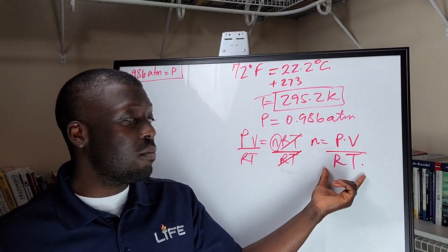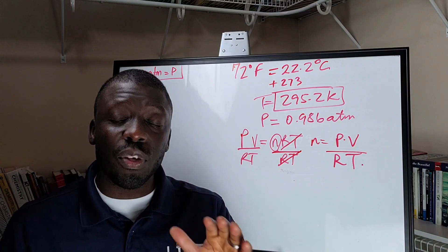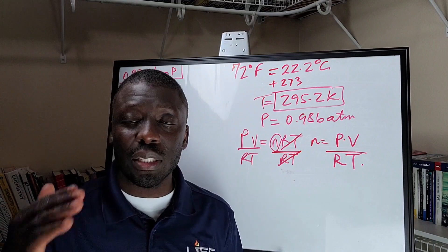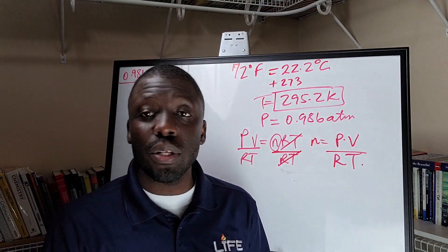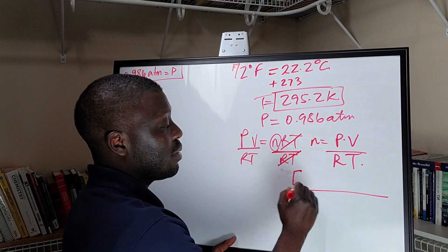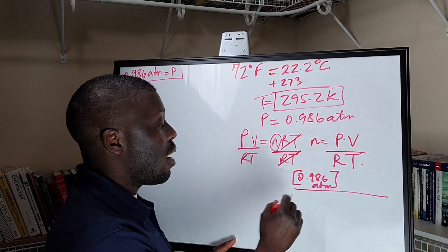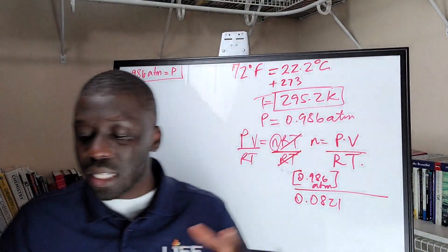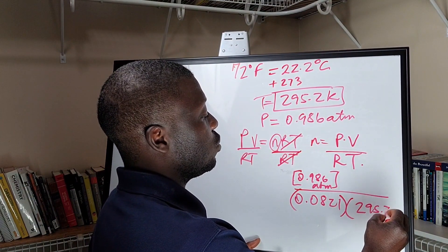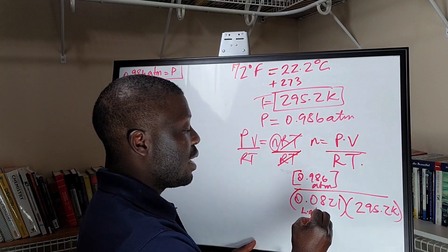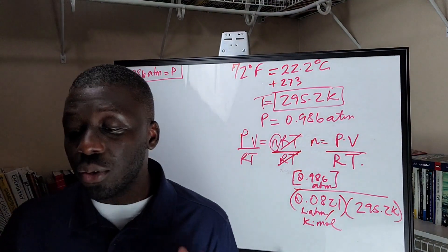So basically, the number of moles can be found using this formula. We have a value for R that we can use as well, which is a constant. The point of this video is really to help you see how we set up each step, and you can watch it and see where you might have questions. Let me know if you have any questions after you watch the video. We have 0.0821 for R, with units of liter atmosphere per Kelvin mole.